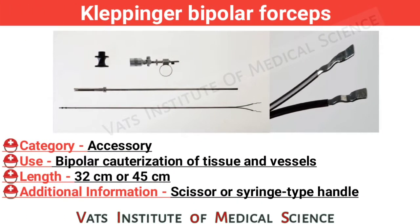Bipolar cautery. Category: accessory. Use: bipolar cauterization of tissue and vessels. Length: 32 cm or 45 cm. Additional information: fenestrated tips.